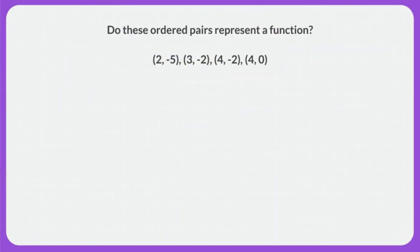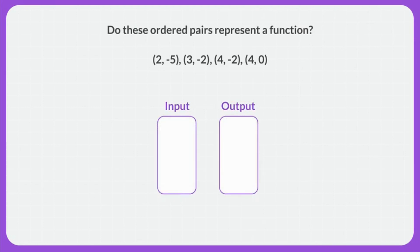I'm going to figure out if this group of ordered pairs represents a function. To be a function, every input needs to have exactly one output. To help figure out if this is true in this example, I'm going to use an input-output map, like this.